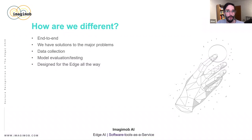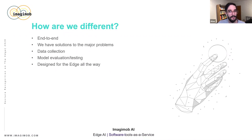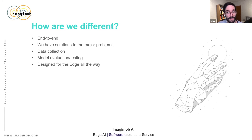So how is Imagimob AI different from other software and services? We have a true end-to-end solution, all the way from data collection to a finalized model. As you can see, we have solutions to the major problems you encounter when building real products using Edge AI — not just proof of concepts. We have a very powerful data collection, annotation, and visualization pipeline, plus outstanding model evaluation and testing that saves a lot of time. And since we have an end-to-end solution, we can optimize for the edge in every step — from pre-processing through model search, building, and training, all the way to conversion to C code.